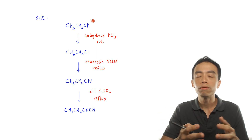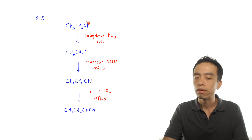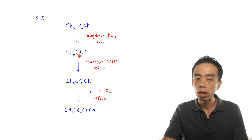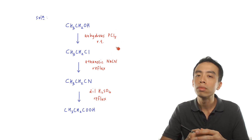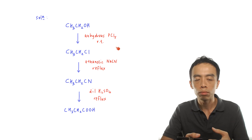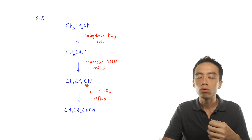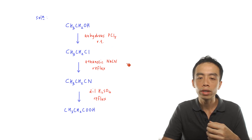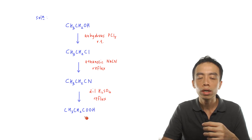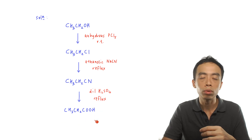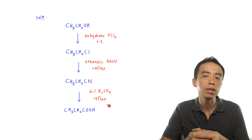So once we are done with the planning, we can answer this question properly. I have ethanol, an alcohol. If I want to convert it to a chloroalkane — chloroethane — I can use anhydrous PCl₅ at room temperature, or anhydrous SOCl₂ at room temperature. Once I have the chloro compound, I want to do a step-up reaction to convert it to a nitrile using ethanolic NaCN, reflux. Once I have this nitrile, I can hydrolyze it to the acid functional group — our propanoic acid — using dilute H₂SO₄ heating under reflux.